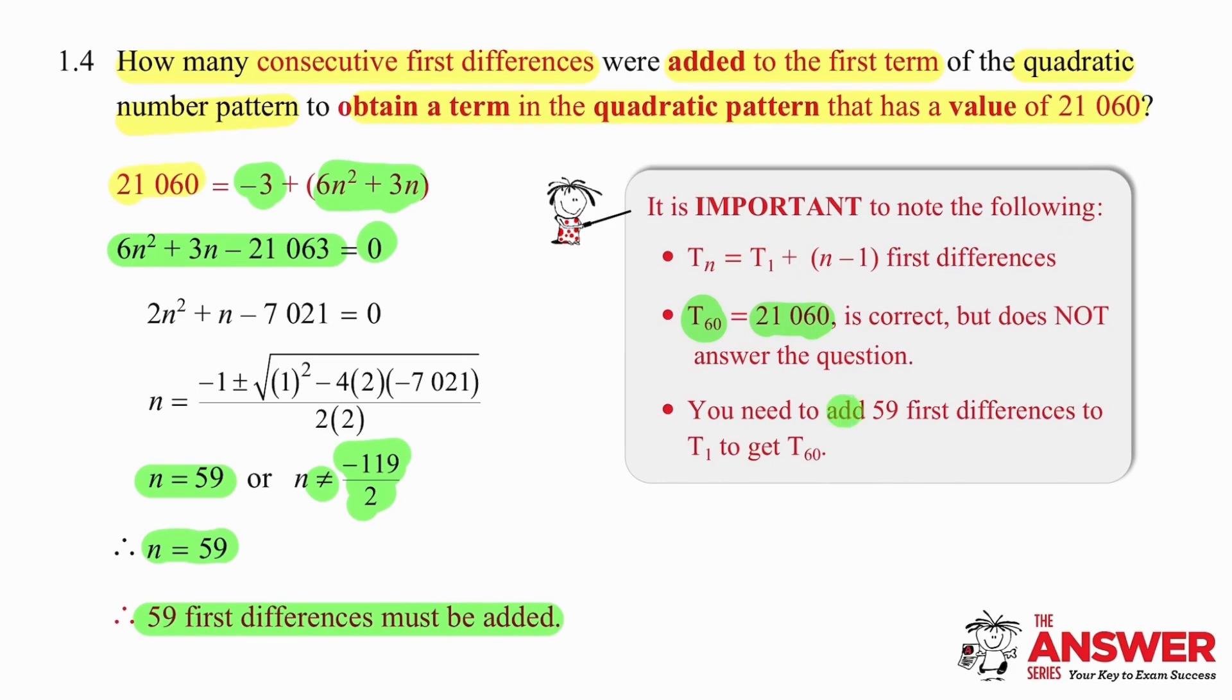So if you chose to work out that the 60th term has a value of 21,060, then you have to work backwards and work out that 59 first differences were added to the first term in order to get that value of T₆₀. So no matter what method you used, the final answer is 59 first differences must be added. Make sure you answer the question that you have been asked.